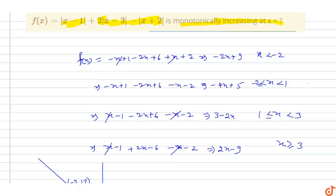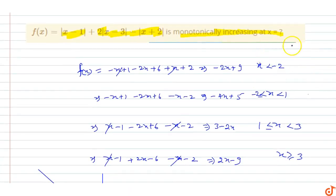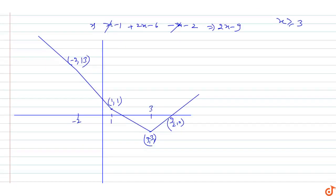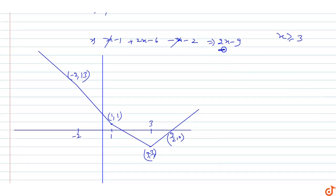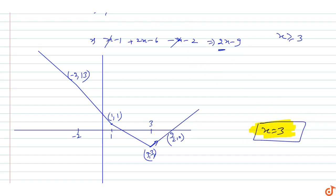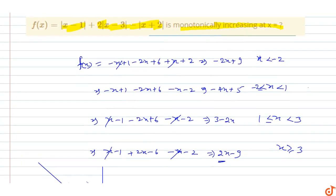The question asks where f(x) is monotonically increasing. Looking at the graph, for x less than minus 2 and minus 2 to 1 and 1 to 3, the function is decreasing. After x = 3, the slope is positive, so the function is monotonically increasing. Therefore, f(x) is monotonically increasing at x equal to 3, and that is the answer.